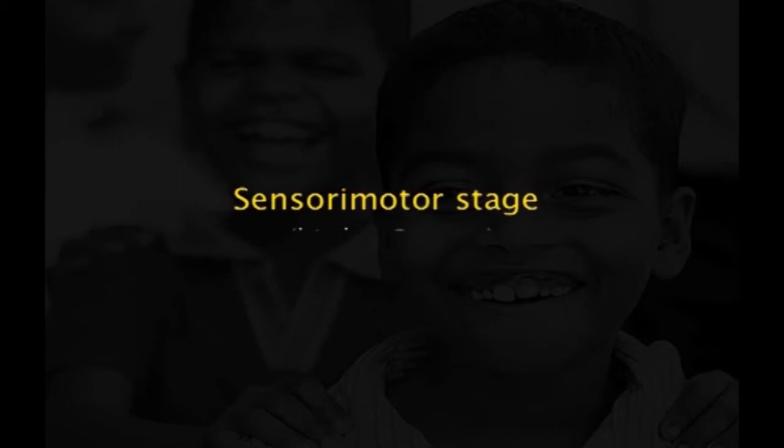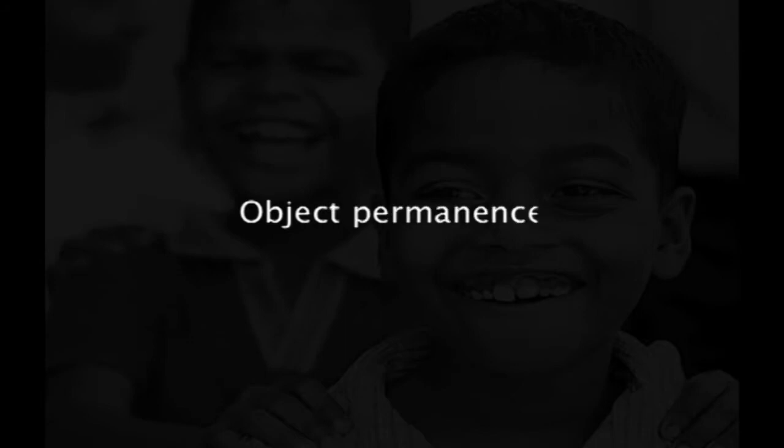Piaget's theory identifies four developmental stages and the process by which children progress through them. The first is the sensorimotor stage, from birth to two years. The child, through physical interaction with his or her environment, builds a set of concepts about reality and how it works. This is the stage where a child does not know that physical objects remain in existence even when out of sight — this is called object permanence.